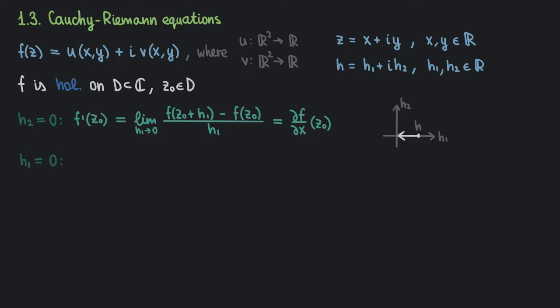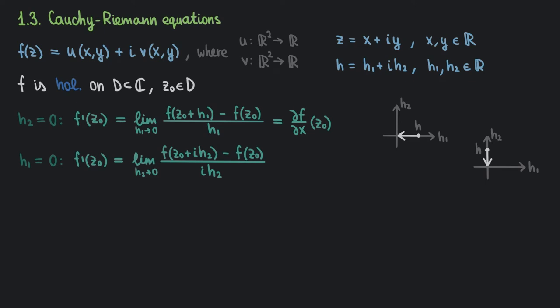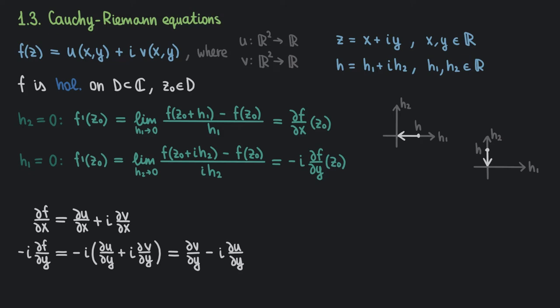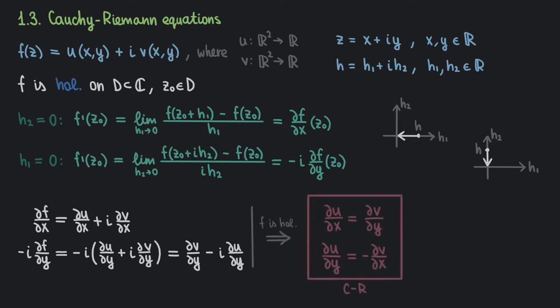Similarly, let h₁ = 0, so h approaches 0 along the imaginary axis. Then f′(z₀) = limit as h₂ → 0 of the corresponding expression. We take 1/i out of the limit since it's a constant, and what's left is the partial derivative of f with respect to y — the derivative in the imaginary direction. Writing f as u + iv, since f is holomorphic these two expressions for the derivative must be equal. Equating real and imaginary parts gives: ∂u/∂x = ∂v/∂y and ∂u/∂y = −∂v/∂x. Or without using u and v: ∂f/∂y = i · ∂f/∂x.